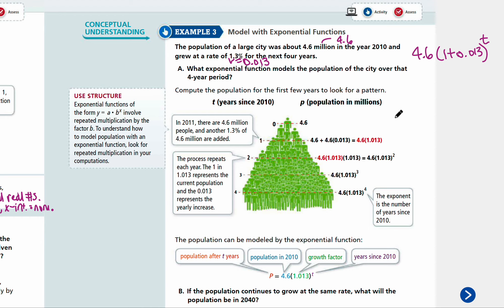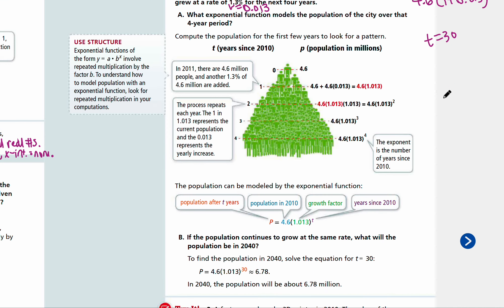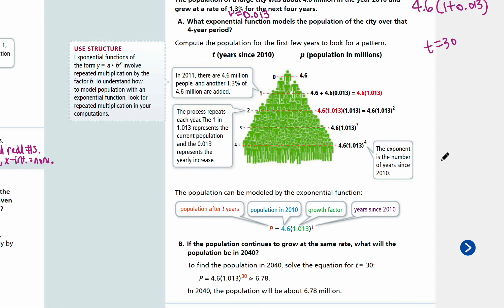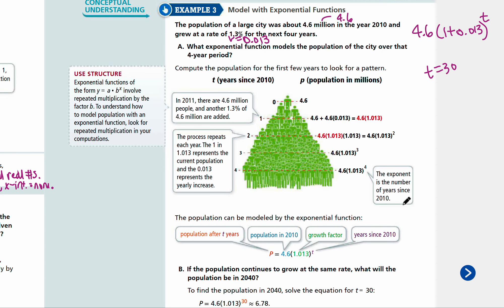Part B: if the population continues to grow at the same rate, what would be the population in 2040? Since 2010, how many years have passed in 2040? 30 years. So t is 30. You just have to plug it in and use the calculator to figure it out. You can round it to hundreds for population, since this is in millions. So it's going to be about 6.78 million if it continues to grow at this rate.